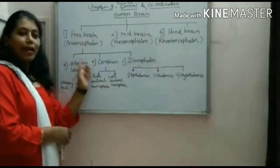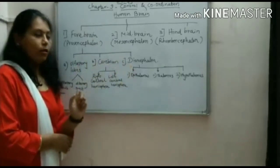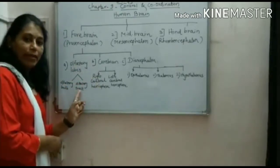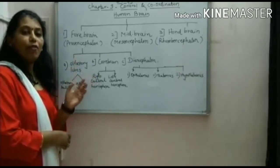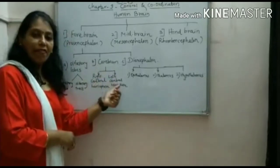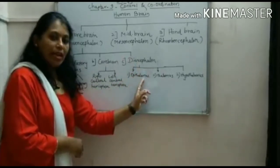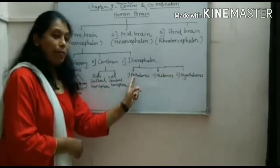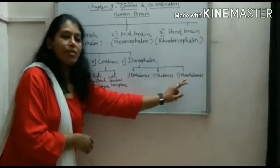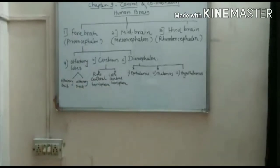The forebrain is divided into three parts: olfactory lobes, cerebrum, and diencephalon. The olfactory lobes are divided into the olfactory bulb and olfactory tract, and this area is related to the sense of smell. The cerebrum is divided into two equal parts: the right and left cerebral hemispheres. The diencephalon is divided into three parts: epithalamus, thalamus, and hypothalamus. 'Epi' means above, so epithalamus is above the thalamus; 'hypo' means below, so hypothalamus is below the thalamus.